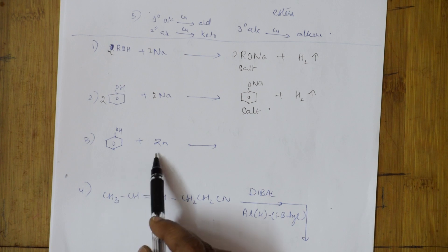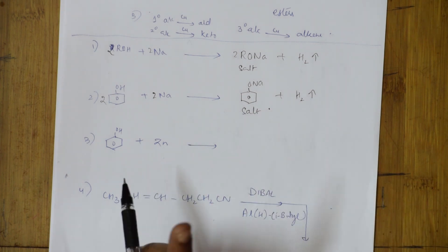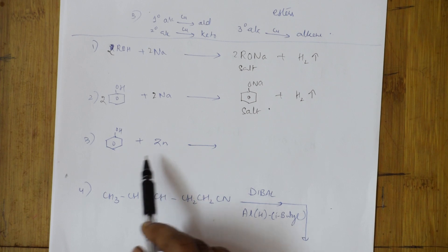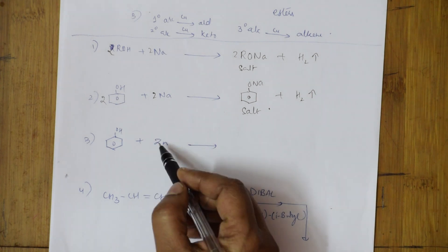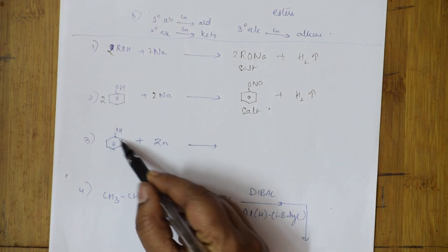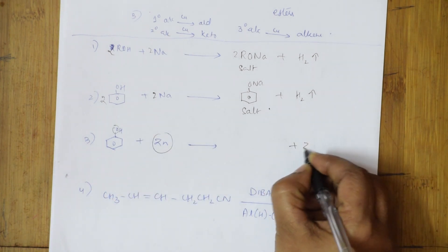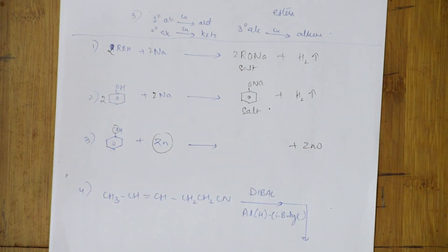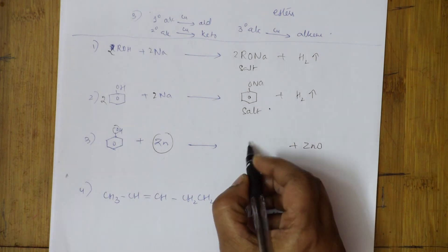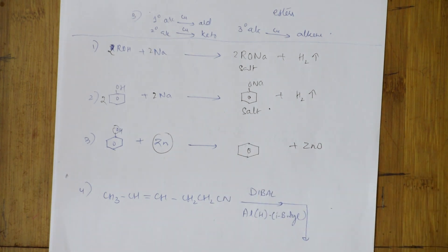Phenol plus zinc: don't write OZn — that's wrong. Zinc acts as a reducing agent and removes the oxygen from phenol. The hydrogen shifts back, and you are left with a benzene ring. Zinc removes oxygen; you get benzene.